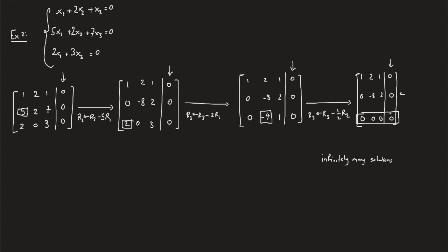The last row is not useful. The row before it gives us -8x2 plus 2x3 equals 0, so x3 equals 4x2. This is one condition. The last condition is obtained from the first row: x1 plus 2x2 plus x3 equals 0, hence x1 equals -2x2 minus x3. Replacing this, we get x1 is -2x2 minus 4x2, that is -6x2.